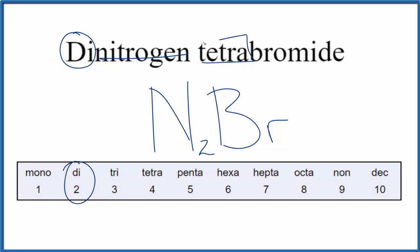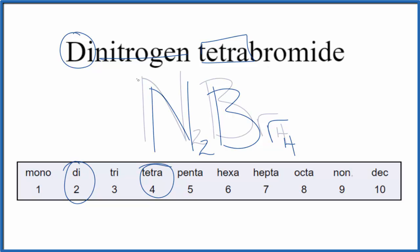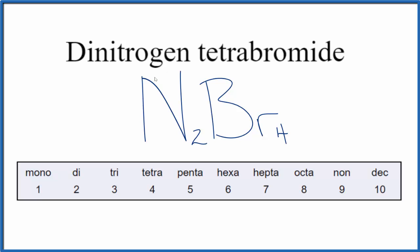And tetra right here — tetrabromide — tetra means 4, so N2Br4. The formula for dinitrogen tetrabromide is N2Br4. If you are given the formula and asked to write the name for N2Br4, you need to recognize you have 2 nonmetals, so you'd use prefixes to write the name.